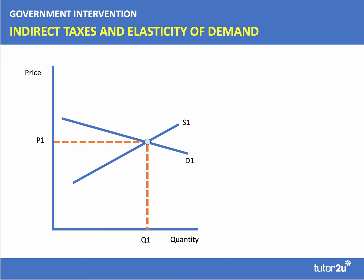Let's spend a few minutes looking at what the effect of an indirect tax is on the market. Here is our initial market — the equilibrium is at price P1 and quantity Q1. If we introduce a specific tax into the market, then the supply curve will shift up, and the amount of the tax is shown by the vertical distance between the two supply curves.